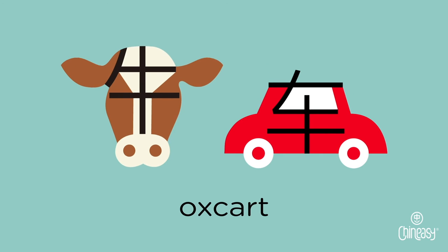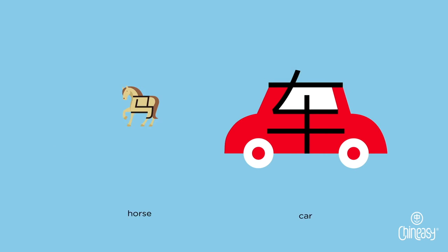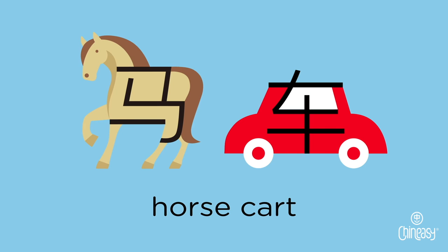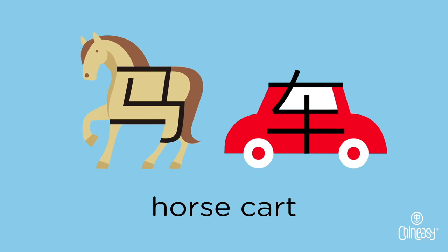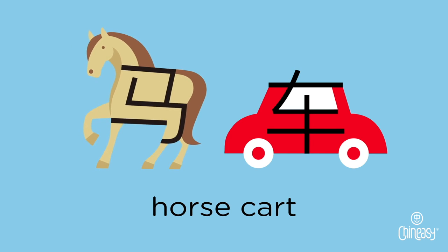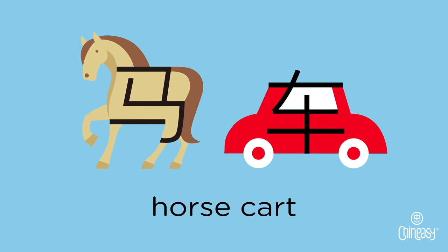牛车. Replace 牛 with 马, we get horse carts, 马车, which were used to transport people or military personnel.